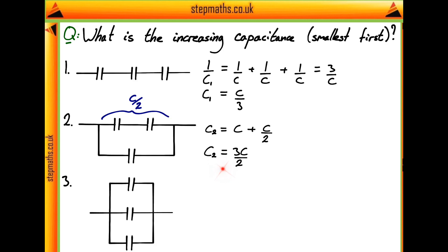Giving us this total capacitance for configuration two of three C over two. Finally, in the third one, we have three different capacitors in parallel, so we just do the opposite of what we do with resistors and we just add them, whereas with resistors we would of course add the reciprocals. So this gives a final capacitance with the third configuration of three C.